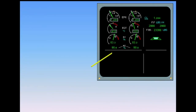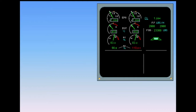A similar indication will be displayed in case of N1 or N2 over-limit. For N1, the indications pulse red. For N2, a red cross is displayed beside the indicated value, which turns red.